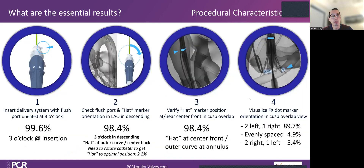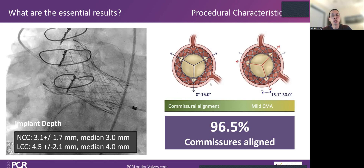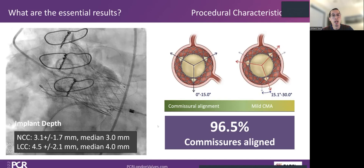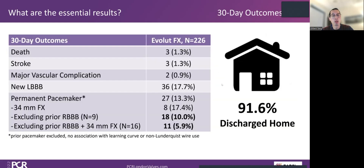The recapture rate was quite low at 26%. Almost 100% flush port at 3 o'clock, which meant almost 100% of the time the 3 o'clock flush port position was maintained. Cap rotation was only needed 2.2% of the time — much less than ProPlus. Most cases had the hat marker in the optimal center-front position on the cusp-overlap view. Dot markers were variable in where they landed, but what we pay attention to is where the CTAP is for commissural alignment. In our series, 96.5% had good commissural alignment. Depth is more symmetric between the non and left coronary cusp. Pacemaker rate was 13.3% in early experience; excluding right bundle branch block and 34 FX, it's down to 5.9% — definite improvement. 92% of patients go home directly.